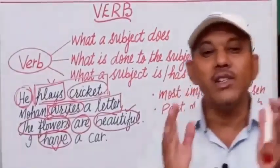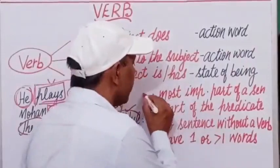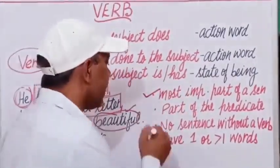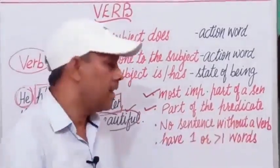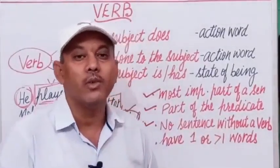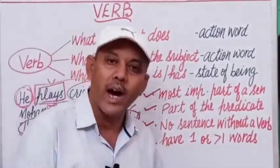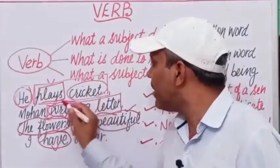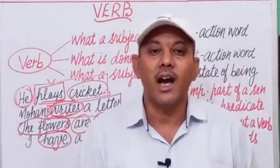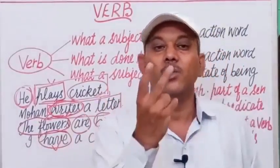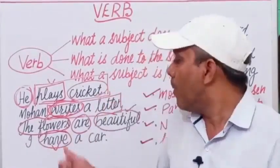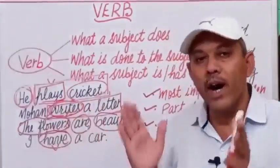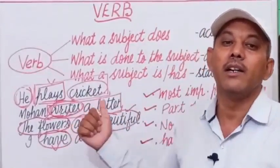Let us know some features of a verb. A verb is the most important part of speech and the most important part of a sentence — without a verb, we can never frame a sentence. Second, it is part of the predicate. Third, no sentence can be framed without a verb. Fourth, a verb may have one or more than one word. For example, 'Mohan writes' is a single-word verb. In present continuous tense: 'Mohan is writing' — two words. And 'Mohan has been writing' — three words, depending upon the tense.